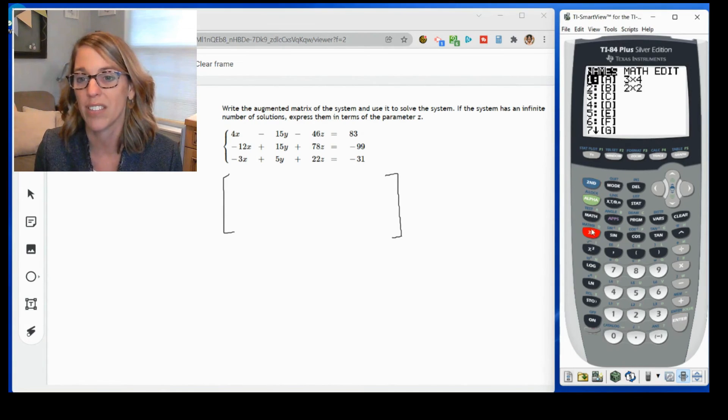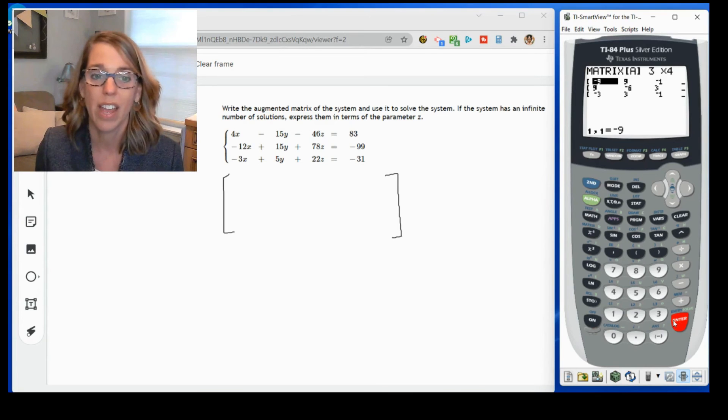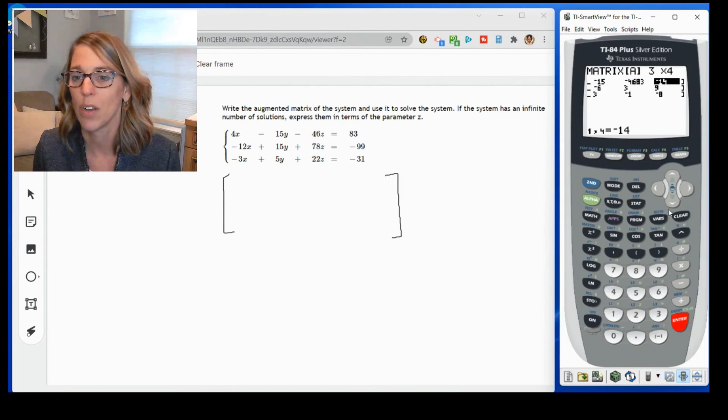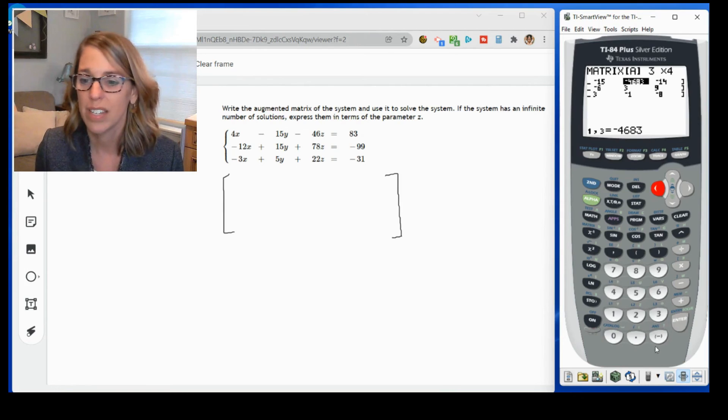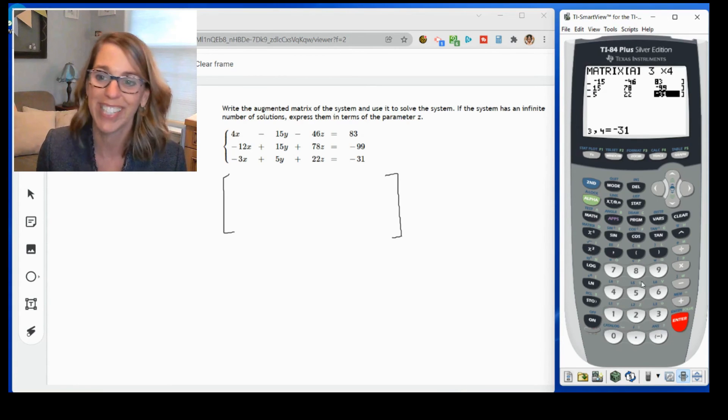So over in the calculator, I'm going to go second and then matrix. I'm going to go ahead and grab matrix A again. And this has three rows and four columns. I'm just going to enter through that and let's go ahead and put in our numbers. I've got four, negative 15, negative 46, 83. And then the next row, negative 12, 15, 78, negative 99. Last row, negative three, five, 22, and negative 31. So it's a little bit of work to get it in there, but completely worth it.